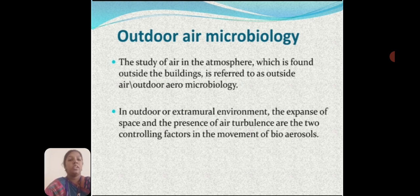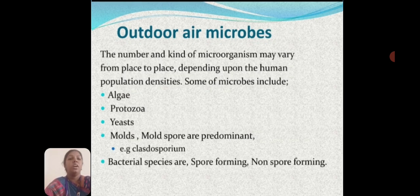Indoor or external environments — the expanse of space and the presence of air turbulence — are the two controlling factors in the movement of bioaerosols. The number and kinds of microorganisms may vary from place to place, depending upon human population densities. Some microorganisms found in air include algae, protozoa, yeast, and mold.